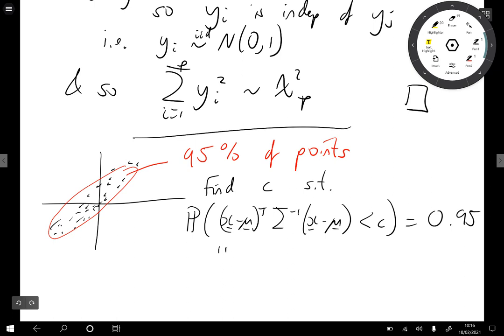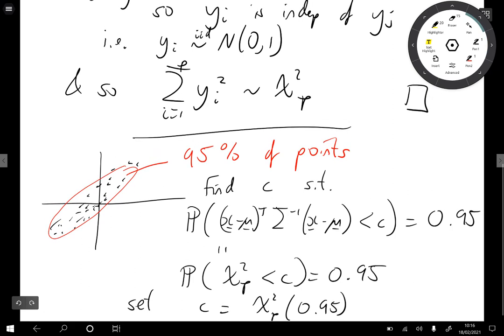Well we know this is a chi-squared p distribution. So this is just the probability that a chi-squared p random variable is less than c equals to 0.95. And so we set c equal to the 95th percentile of a chi-squared random variable with p degrees of freedom. So this allows us to draw confidence ellipses. And so we'll see this more in the exercises.